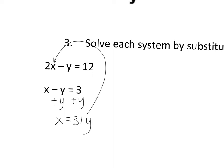Plug x in. So it's 2 times the quantity 3 plus y minus y equals 12. So 6 plus 2y minus y equals 12. So y equals, subtract 6, 6.